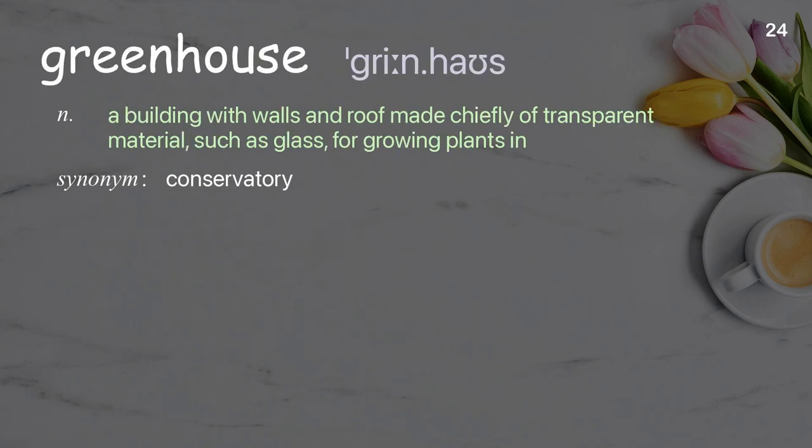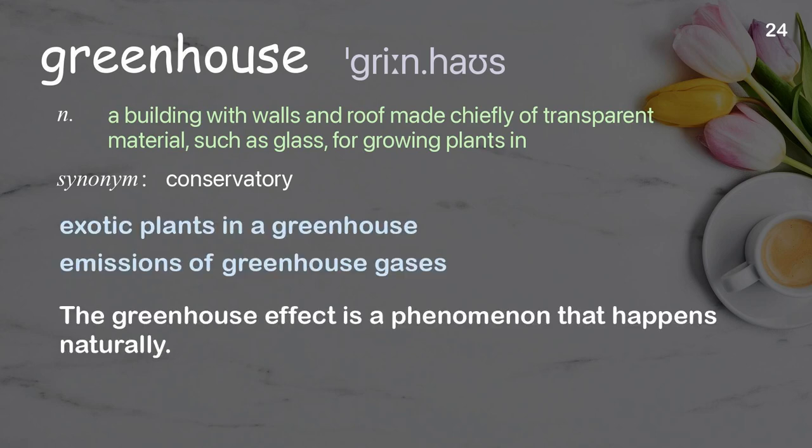Greenhouse: A building with walls and roof made chiefly of transparent material, such as glass, for growing plants in. Examples: Exotic plants in a greenhouse, emissions of greenhouse gases. The greenhouse effect is a phenomenon that happens naturally.